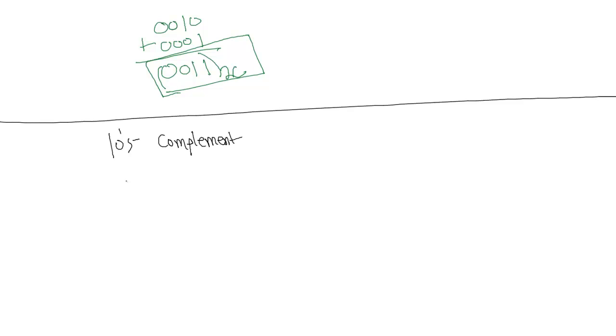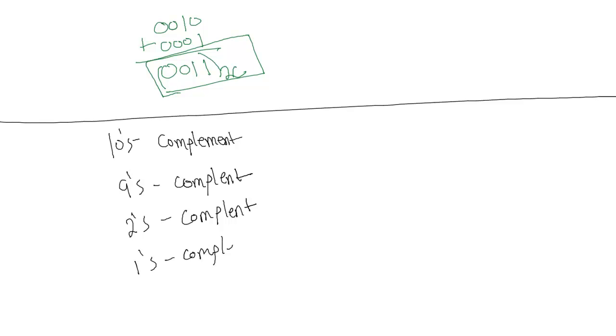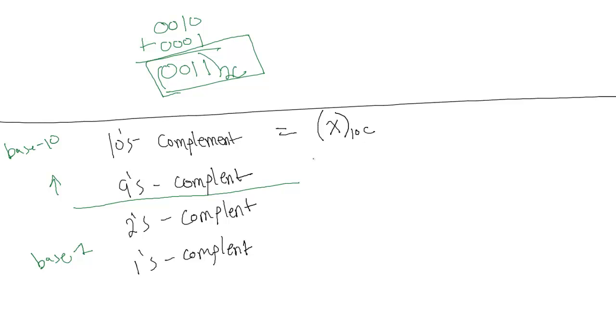I want to go over some vocabulary terms, because the word choice used with complements makes the subject harder than it needs to be. Four common terms: tens' complement, 9's complement, 2's complement, and 1's complement. These terms are misleading because they don't tell you what base they're describing — the first two are base 10 terms, the last two are base 2. Explicitly: tens' complement = x base 10 complement; 9's complement = x base 10 co-complement; 2's complement = x base 2 complement; 1's complement = x base 2 co-complement.